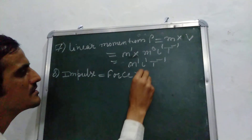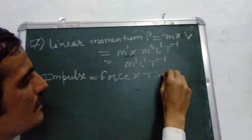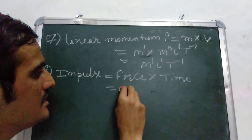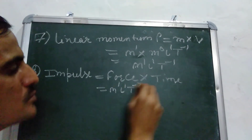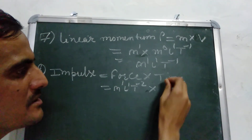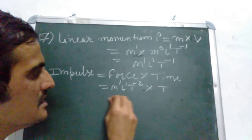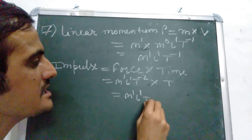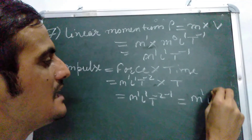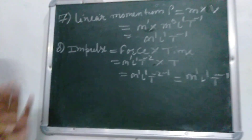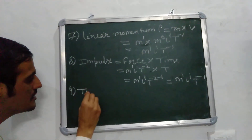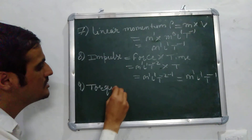From Newton's second law of motion, force is equal to ma, which gives M1 L1 T-2. This is the formula for acceleration, and mass multiplied by time — so it comes out to be M1 L1 T-2 multiplied by T, which is M1 L1 T-2-(-1), giving M1 L1 T-1. This is the dimensional formula of impulse.